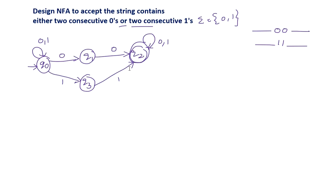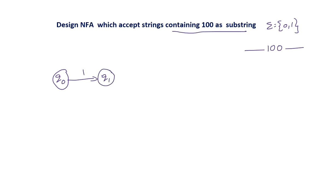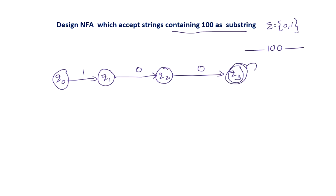The next example: design an NFA that accepts strings containing '100' as a substring, over alphabet {0, 1}. Before and after '100', any number of zeros and ones are allowed. q0 is the starting state; q0 on 1 reaches q1, q1 on 0 reaches q2, and q2 on 0 reaches the final state q3. After reaching q3, and before '100', any number of zeros and ones are allowed.